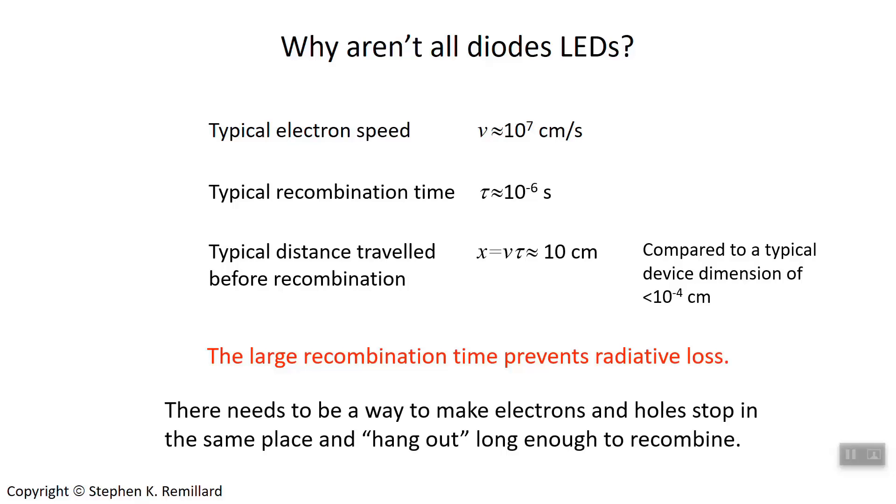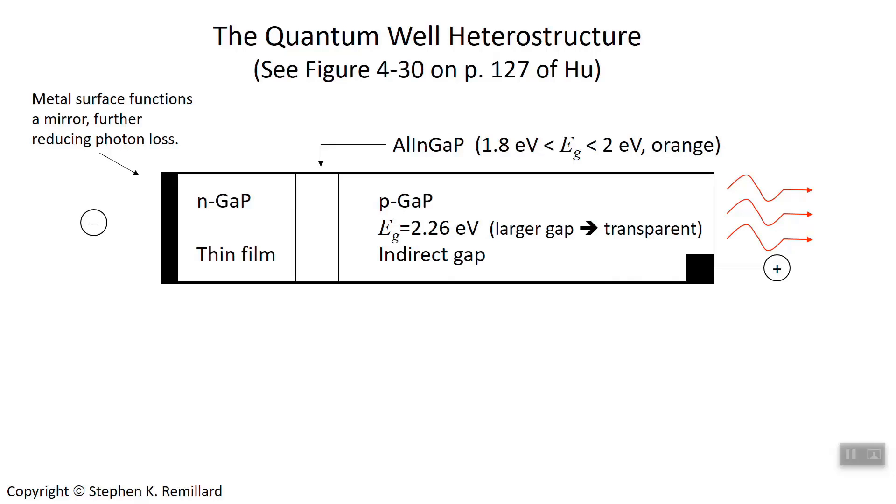We've got to find a way for commercial products to work. We need to find a way to convince electrons and holes to hang out together in one spot long enough. We have to make a little detention center for electrons and holes, where we just hold them for at least a microsecond so they can turn into photons. And that's what's accomplished with the heterostructure shown here.